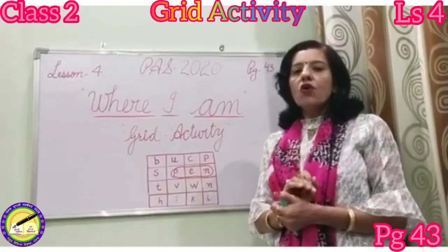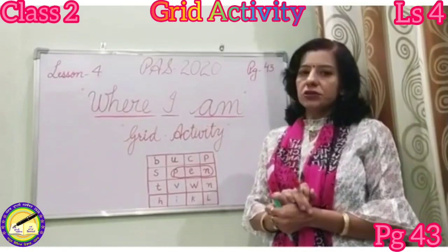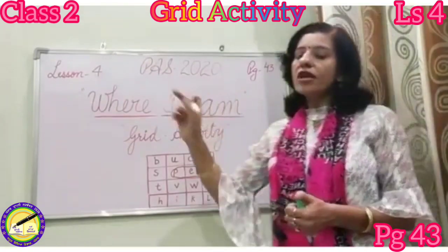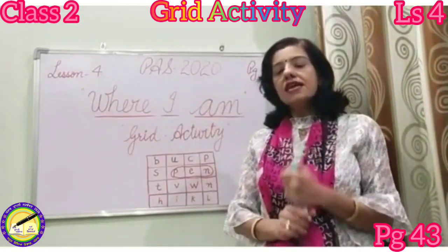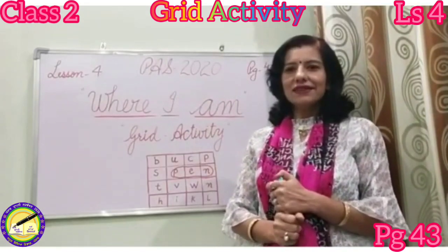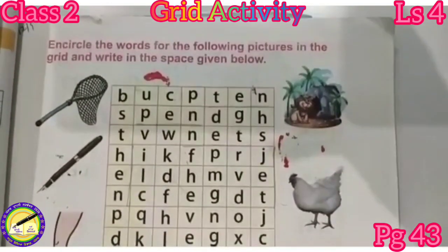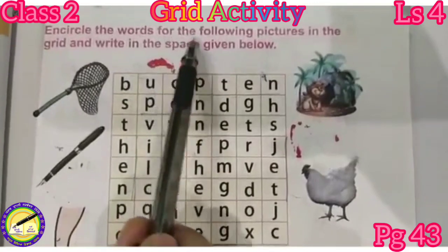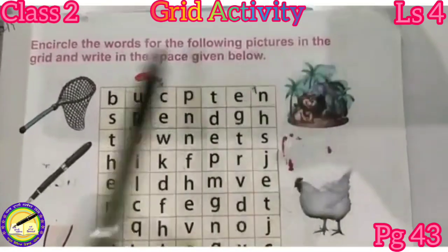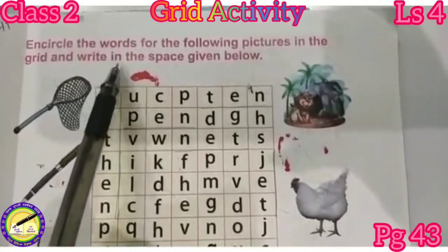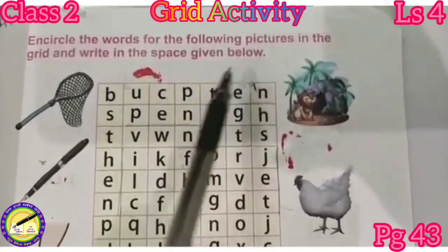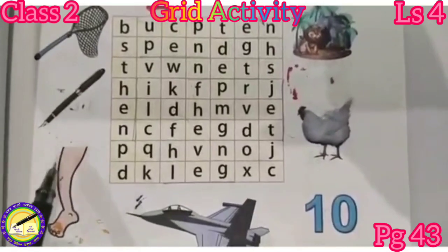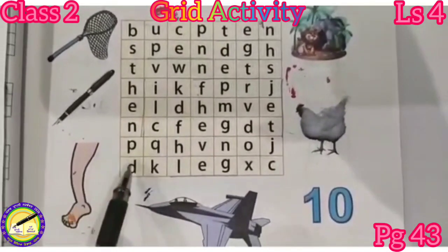Children, same activity we have to practice in your textbook. Get ready with your textbook, page number 43 of lesson number 4. We will practice the same activity. Let us start the activity on page number 43 and circle the words for the following pictures in the grid and write in the space given below.